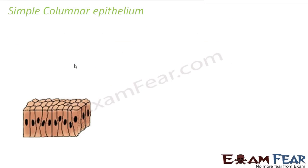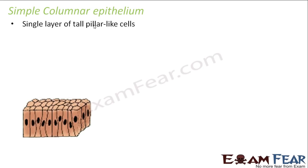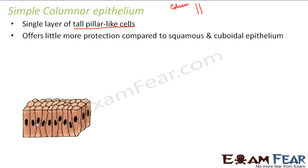Now let us look at the third type — simple columnar epithelium. As the name suggests, it is a single layer of tall, pillar-like cells. The word columnar is derived from column — columns mean something tall, something like a pillar. As you can see in the picture, they are tall cells. Simple columnar epithelium offers a little more protection compared to squamous and cuboidal epithelium, which is quite evident from its structure.